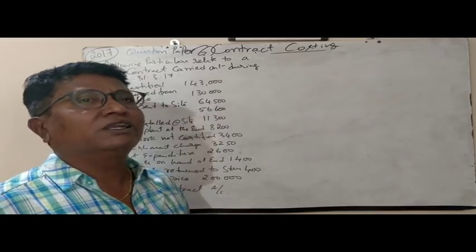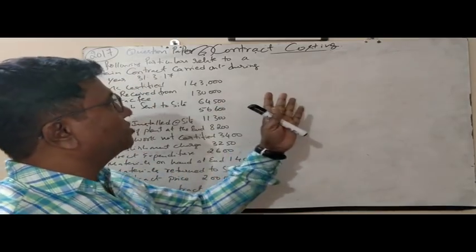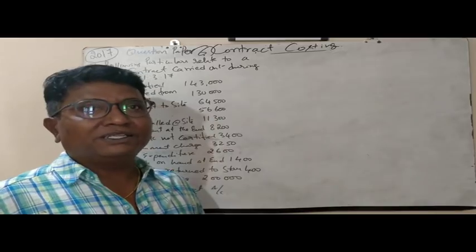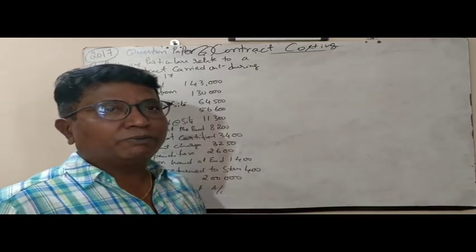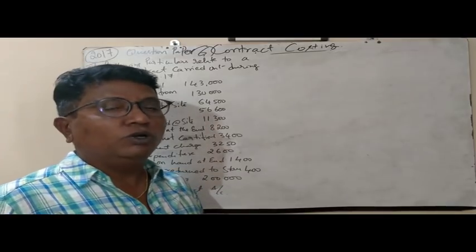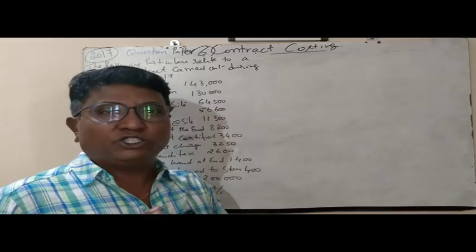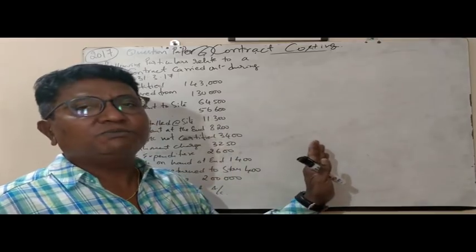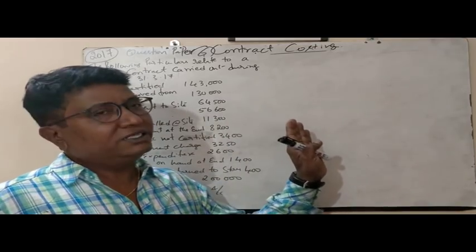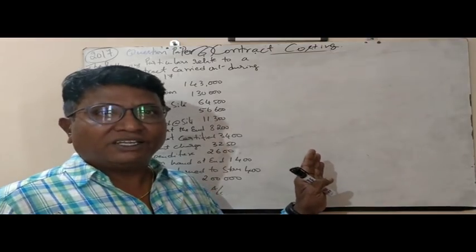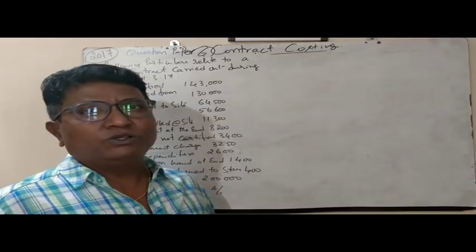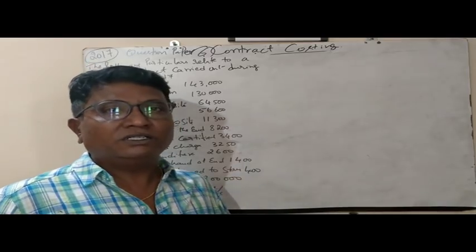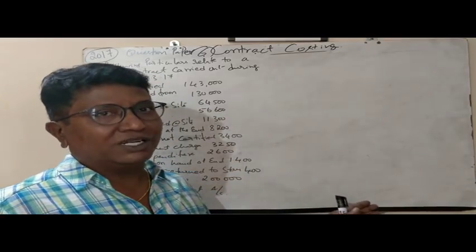This is a very simple chapter where you can learn what contract cost is. Contract is generally about the construction industry and how contractors prepare their accounts. Contractors prepare an account called a contract account in order to show how much profit they have earned in each job undertaken for construction. A contractor is a person who undertakes a job of constructing a building, canal, bridge, or anything. To know how much profit or loss, we prepare a contract account.